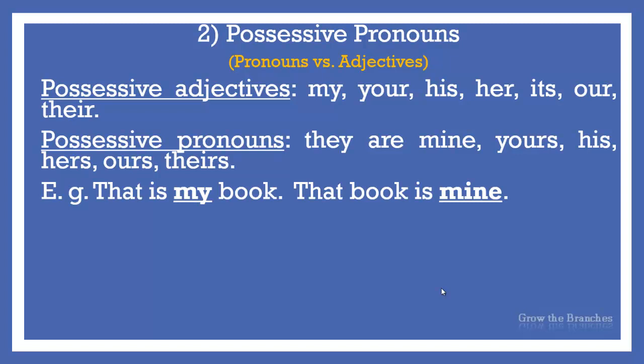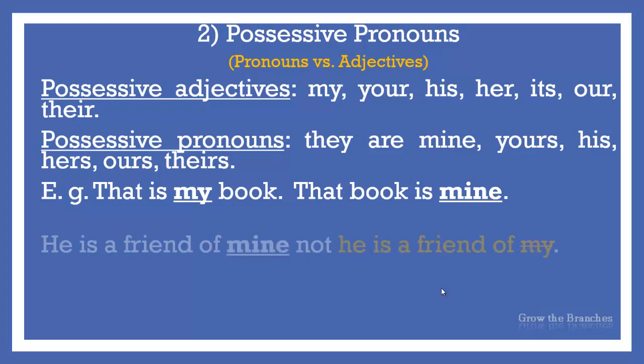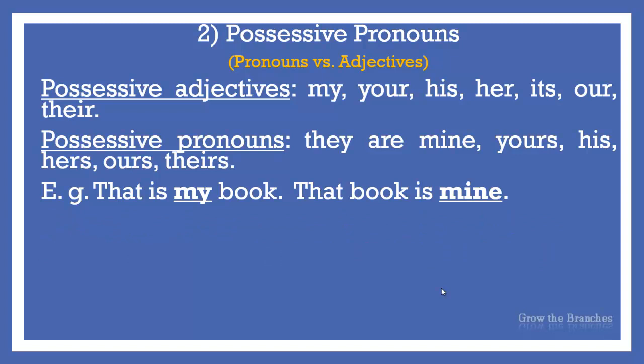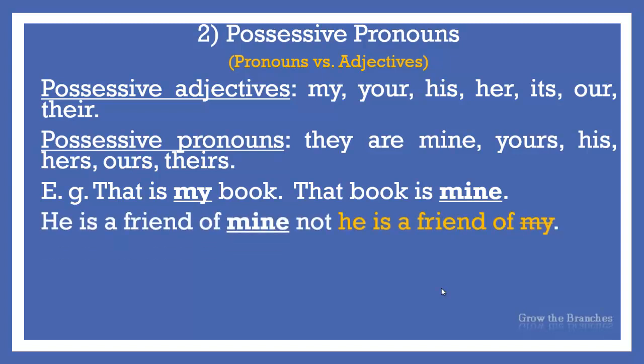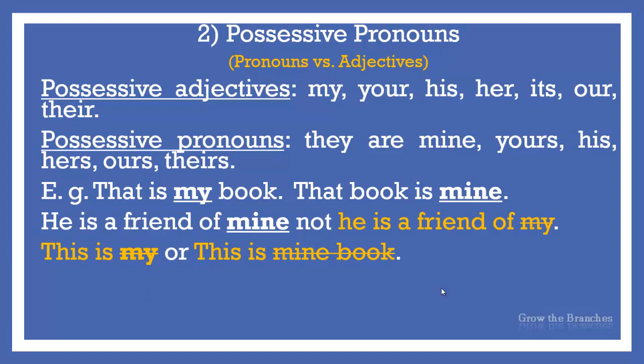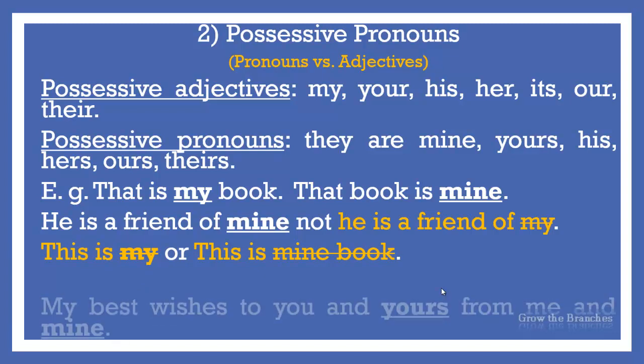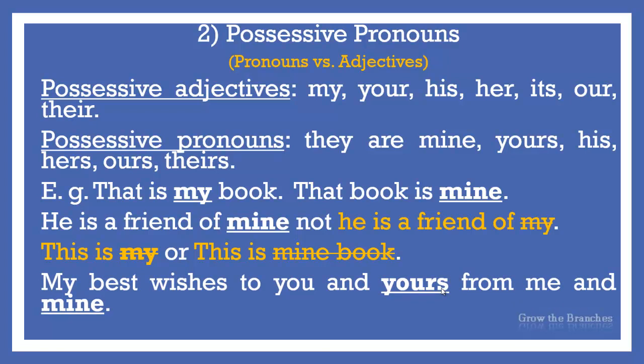That is my book — my, your, or his are possessive adjectives. They occur before the noun book. However, that book is mine or that book is yours. Mine is a possessive pronoun since it replaces the noun book. You cannot say this is my or this is mine book. Also, we say he is a friend of mine. The possessive pronouns are used in such phrases as my best wishes to you and yours from me and mine.